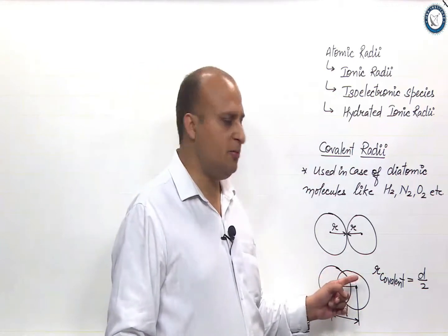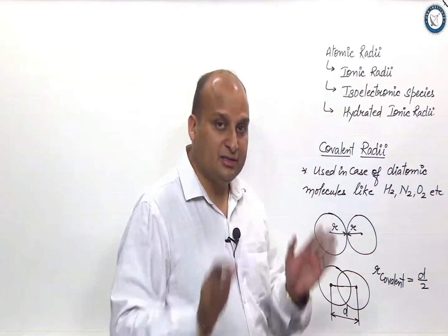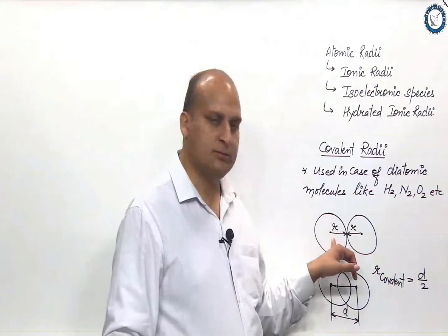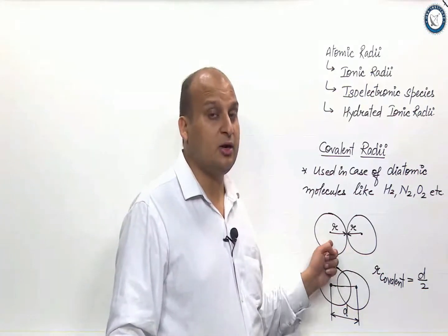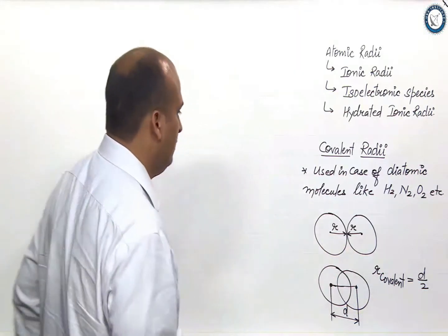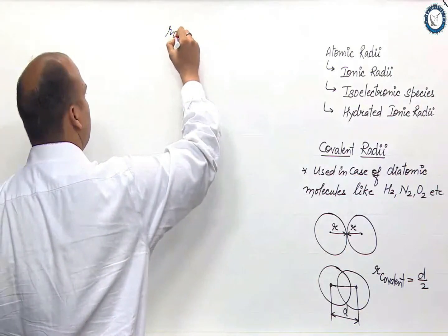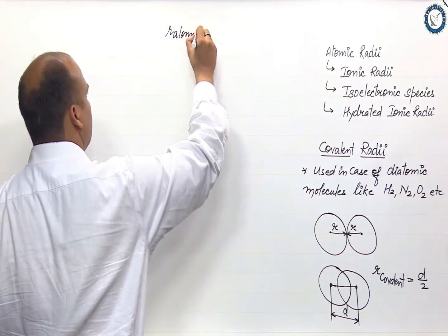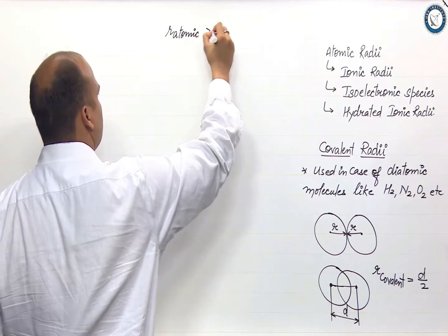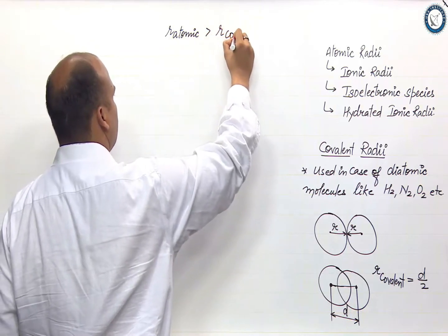Now as you can clearly see from here, this r covalent is smaller than the radius of oxygen. This is the atomic radius, ok. So r atomic is larger as compared to r covalent.